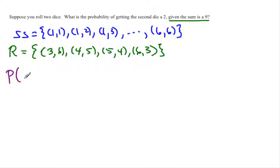So the probability of getting a second die of 2 given that the sum is 9 would be 0 out of the 4, because there is no outcome in this restricted sample space that has a second die of 2 out of the 4 outcomes that are in that sample space.